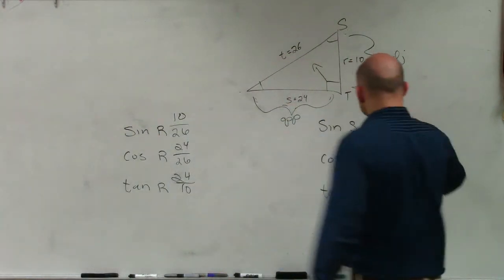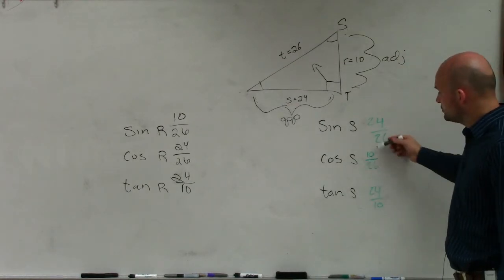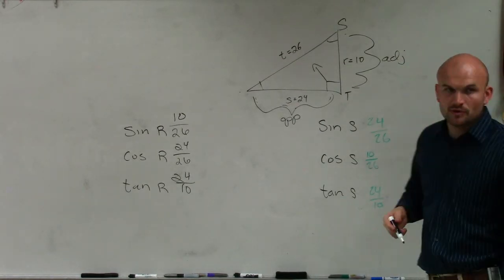So we double check their work. Opposite over hypotenuse, perfect. Adjacent over hypotenuse, perfect. Opposite over adjacent, perfect. OK?